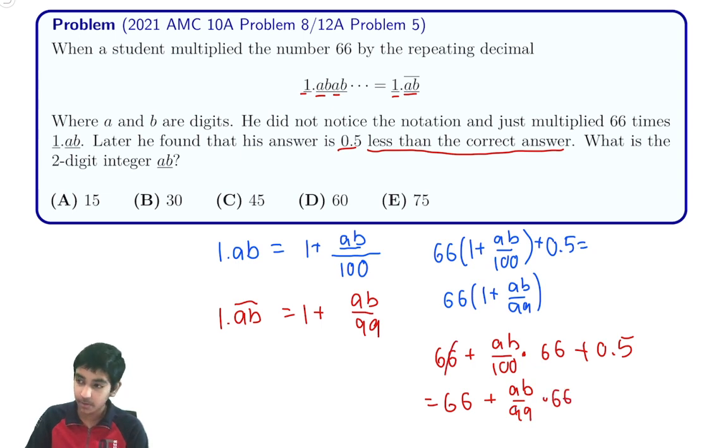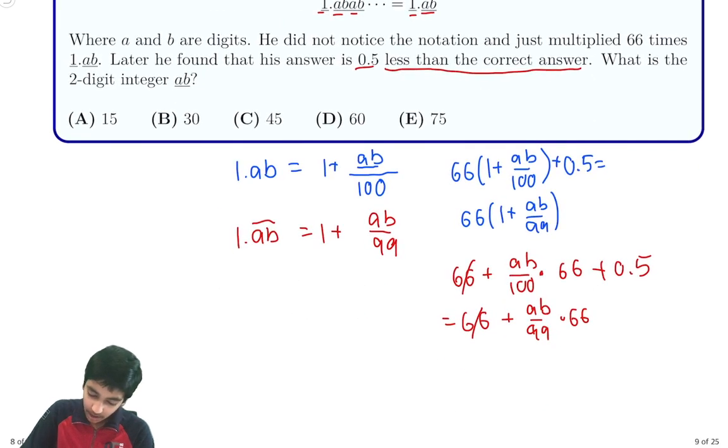So from here we can cancel 66 from both sides and see that 0.5 is just going to equal AB over 99 minus AB over 100.